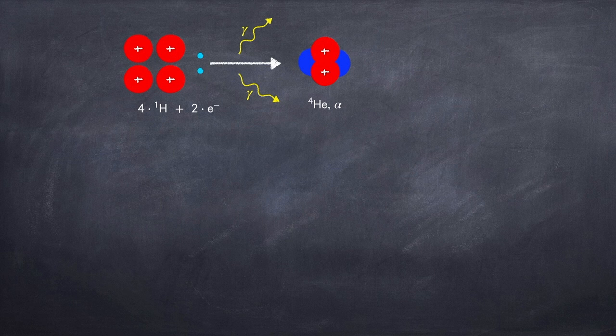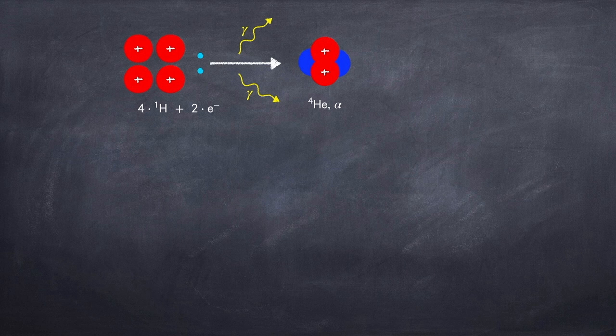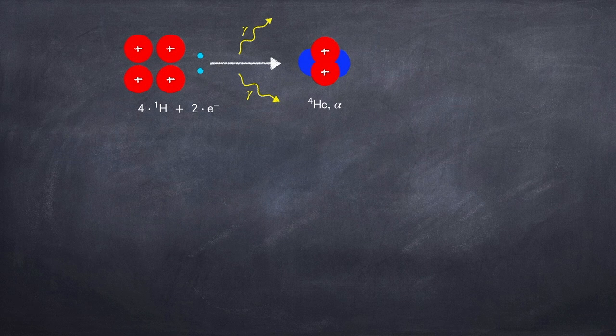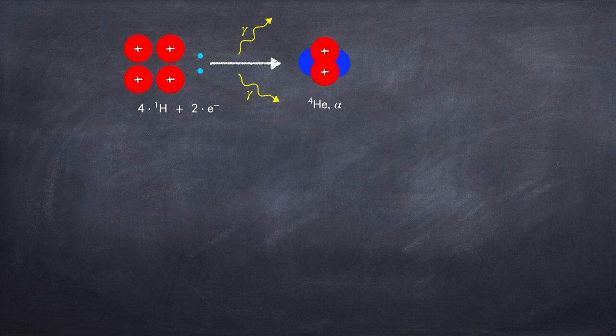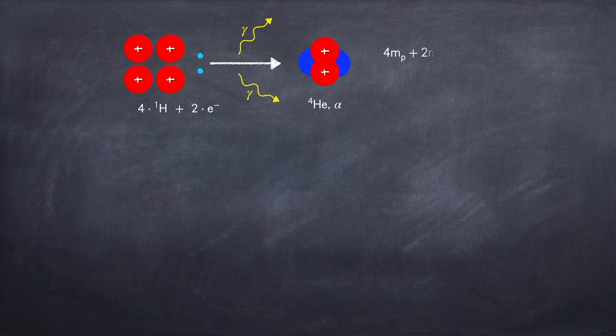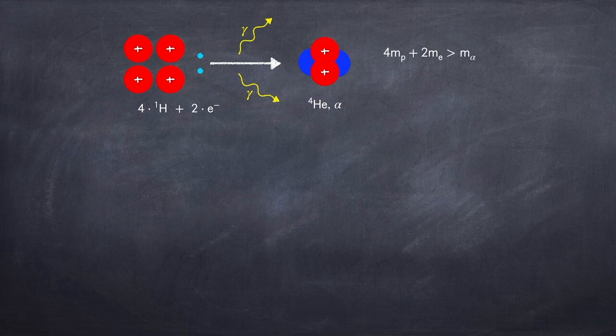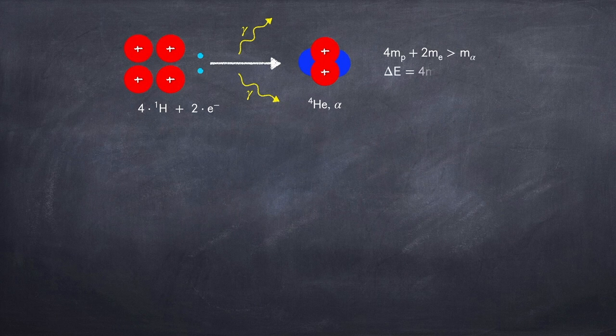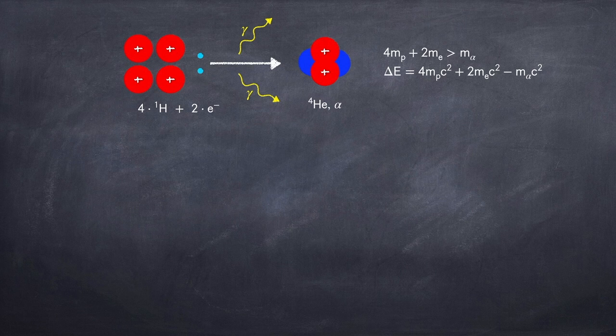We don't really care about the neutrinos right now, they just leave the star and are essentially just lost energy. The photons, however, dump their energy into the star. The energy release comes from the fact that the four protons and the two electrons have a greater mass than the alpha particle. And so the energy release is just the energy corresponding to this mass defect.